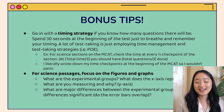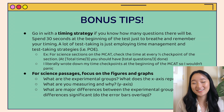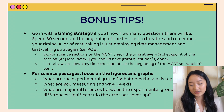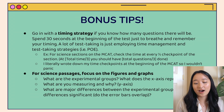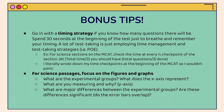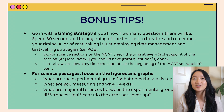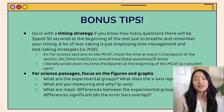The last bonus tip is to go in with a timing strategy. If you know how many questions are on your exam, spend about 30 seconds at the start just to breathe and remember your timing. A lot of test-taking is really just employing time management and strategies like process of elimination. I literally wrote down my time checkpoints at the beginning of the MCAT so I wouldn't panic. For example, with 90 minutes for 60 questions, at 60 minutes left you should have 20 questions done. For MCAT science passages, if you run out of time, go straight to the figures and graphs — those are usually the most tested parts.